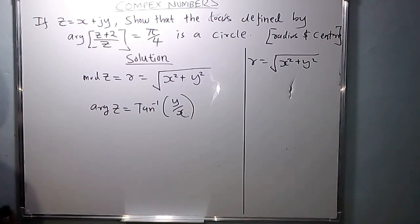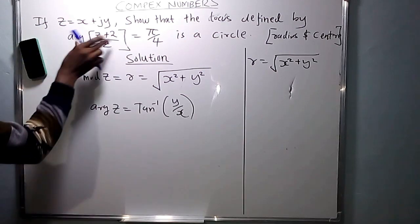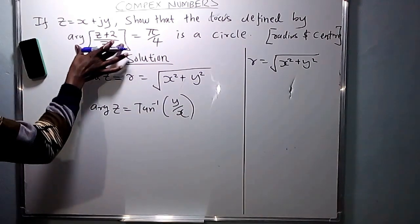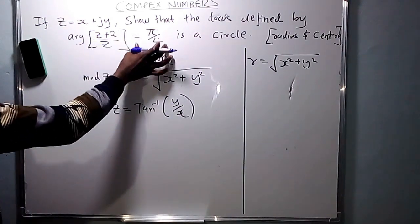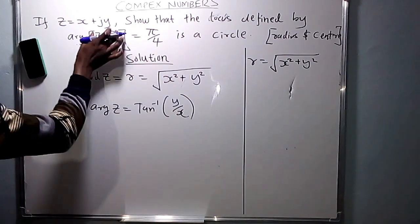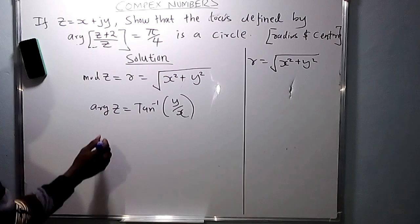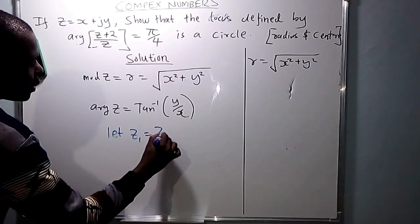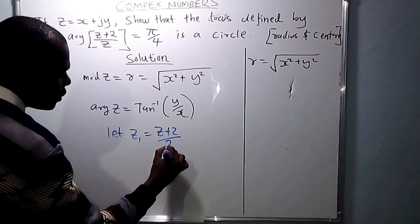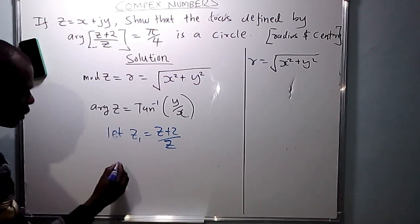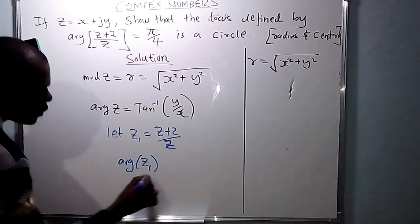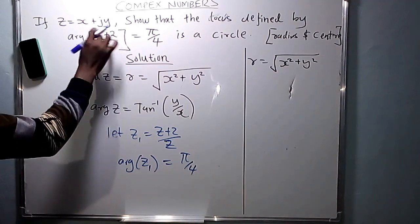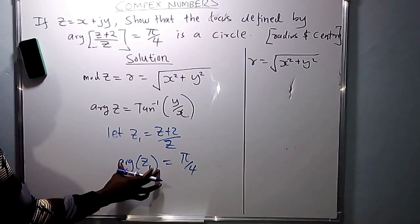Now looking at this question, you've been given the argument of (Z+2)/Z to be π/4. You know that argument of Z is tan inverse of Y over X. So you let what is inside — Z1 — equal to (Z+2)/Z, so that the argument of (Z+2)/Z simply becomes the argument of Z1, which equals π/4.